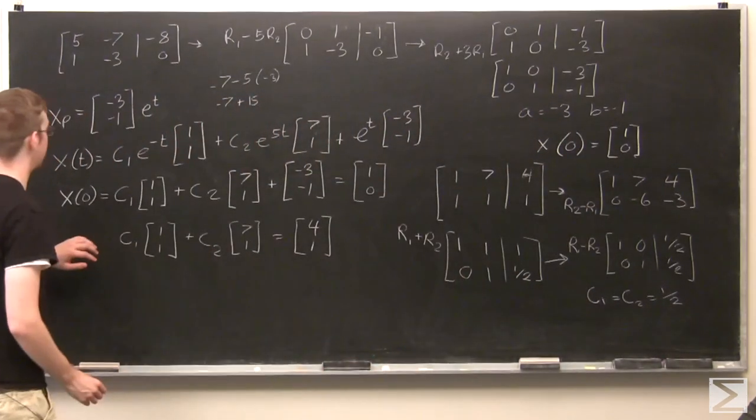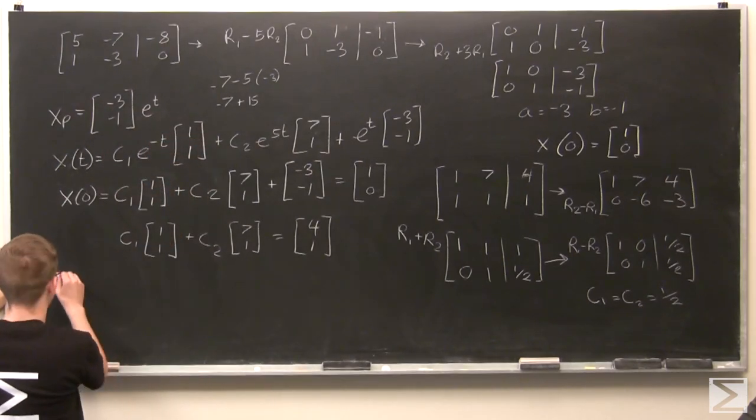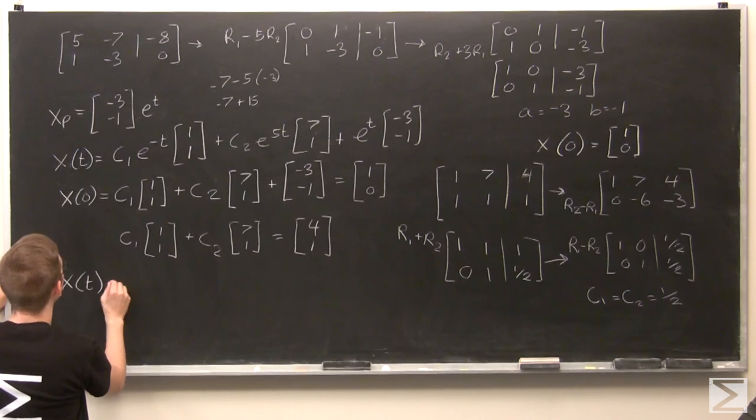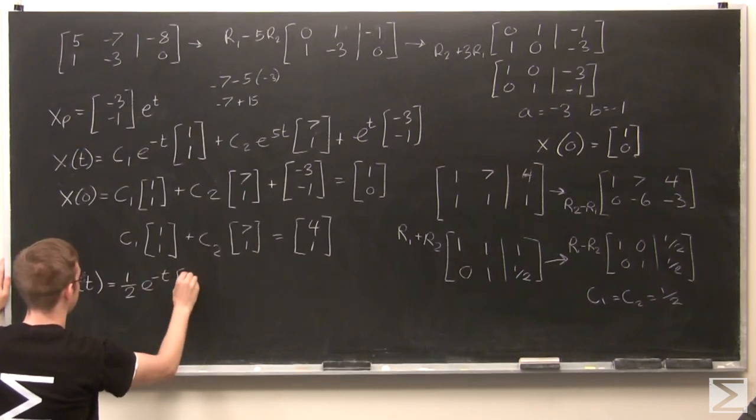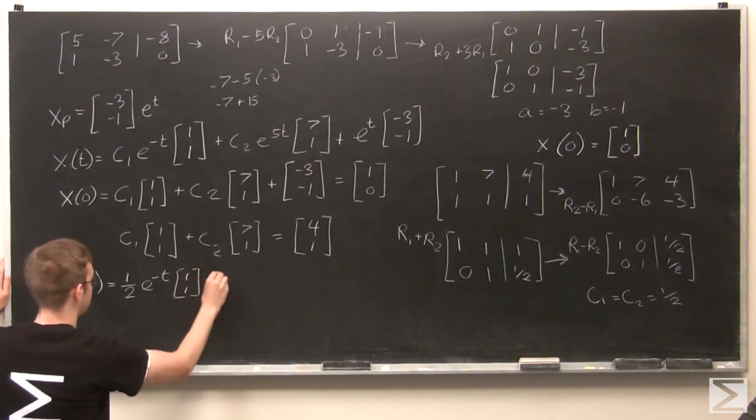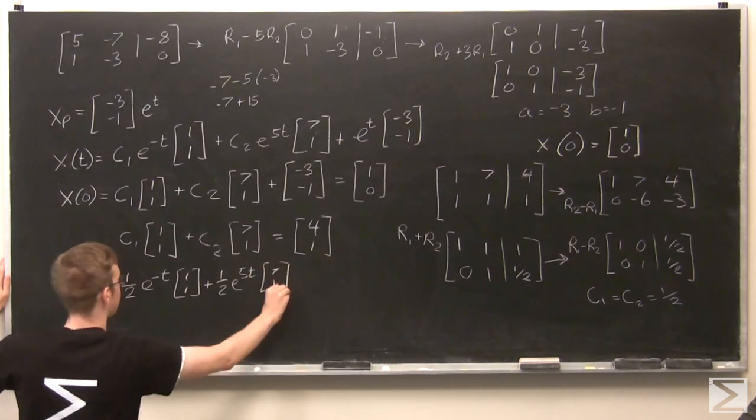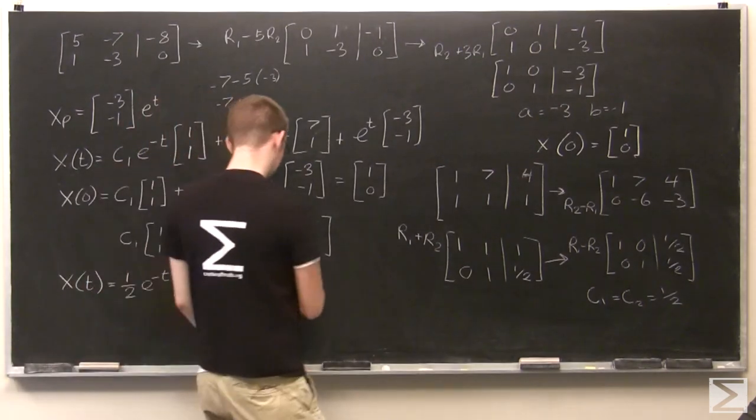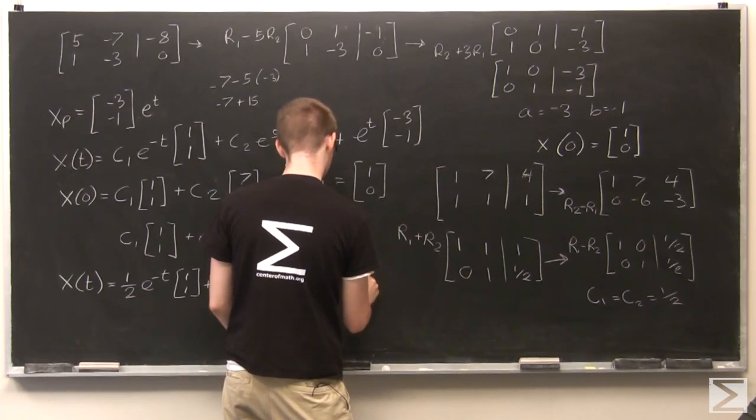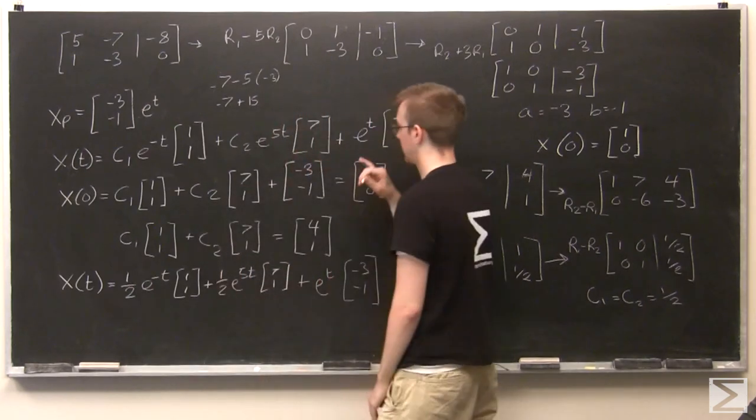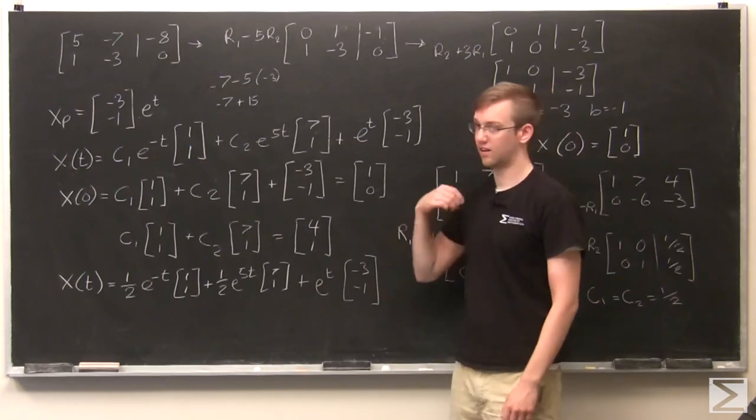So I just need to plug that in right here, and we'll get our final answer: (1/2)*e^(-t) times the vector [1, 1] plus (1/2)*e^(5t) times the vector [7, 1]. So, general solution, solution with initial constraints, and we're done here.